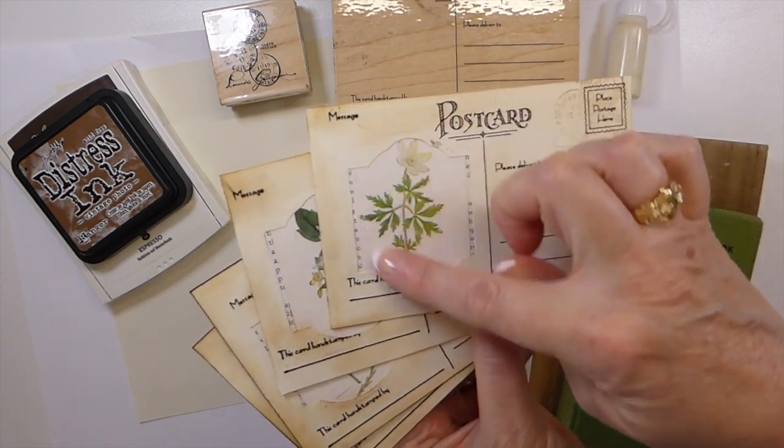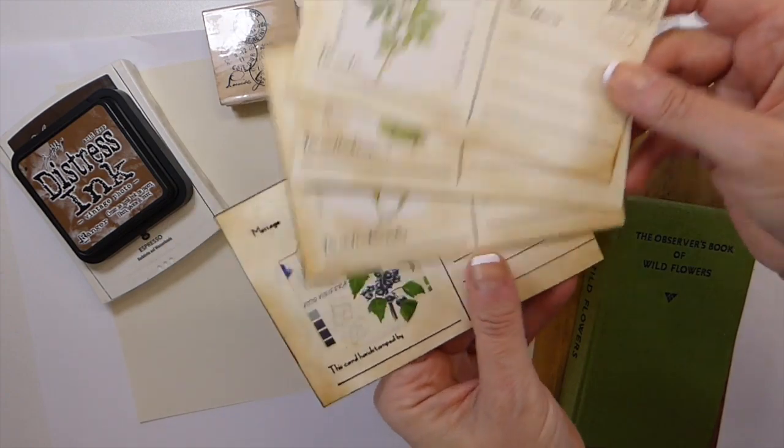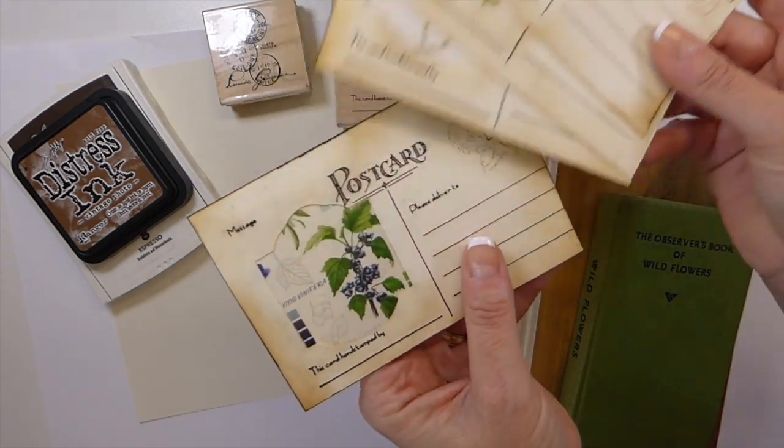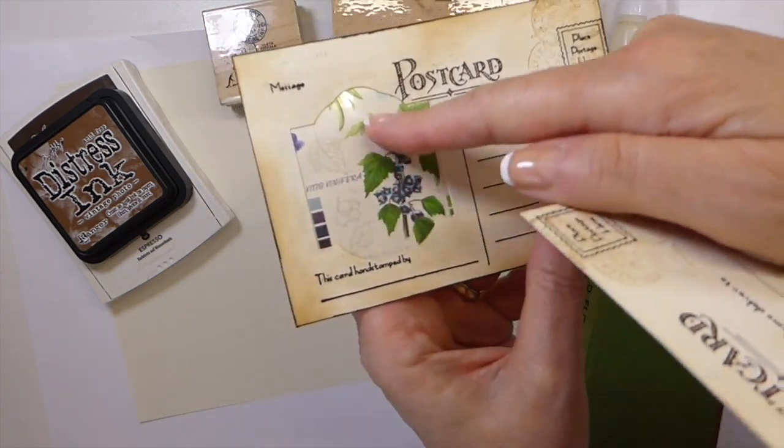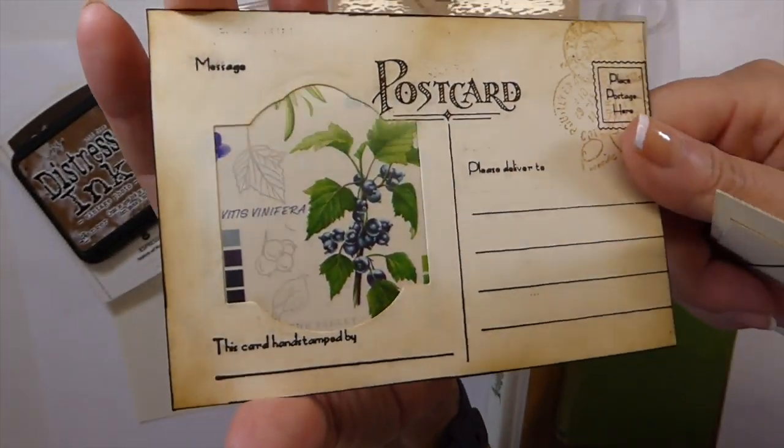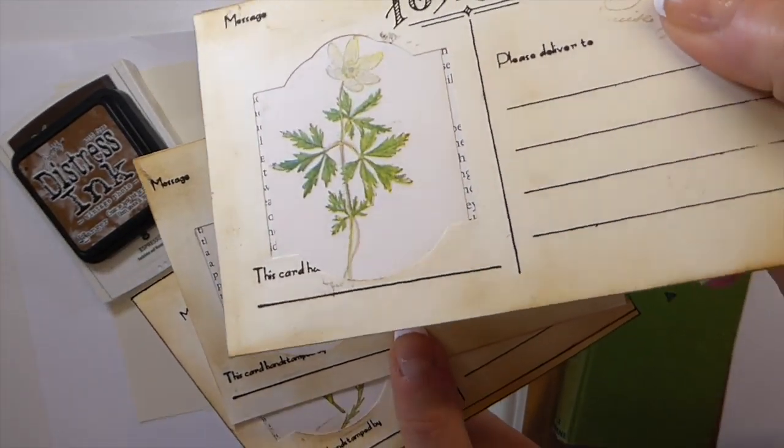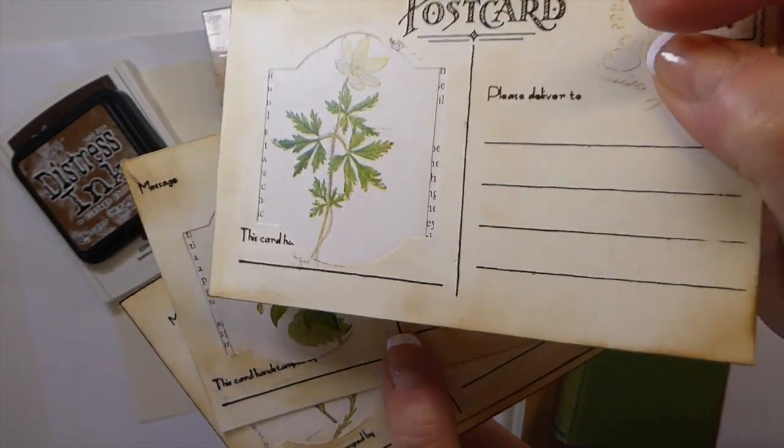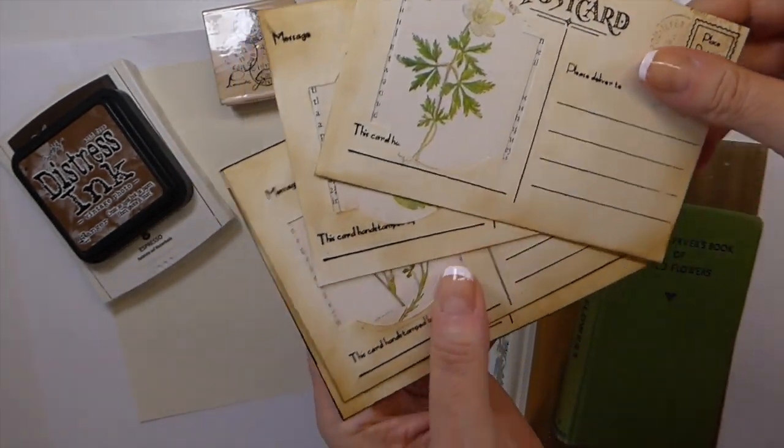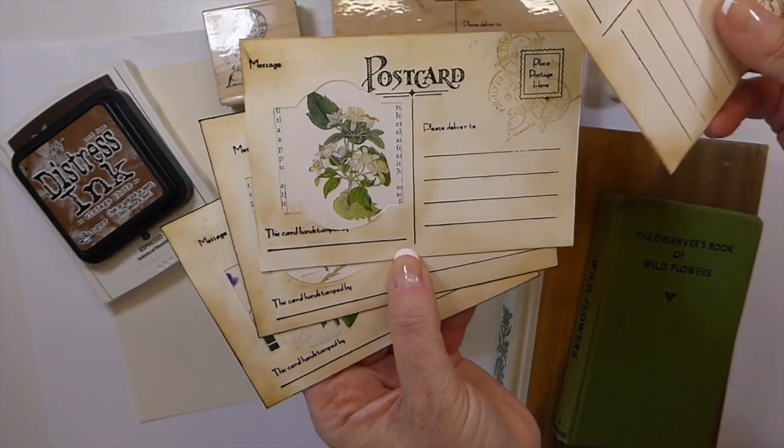These are just little window postcards and I've done them a couple different ways. This one I've actually added some of the acetate to, and then the other ones here I left without adding the acetate because I know some people do not like that plastic look in their journals.